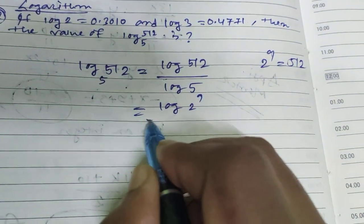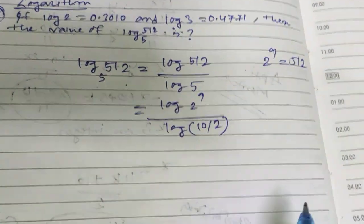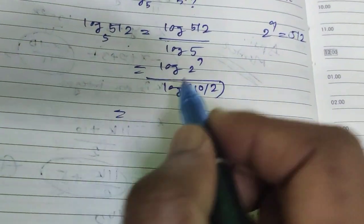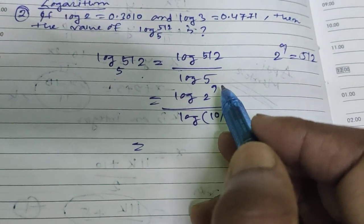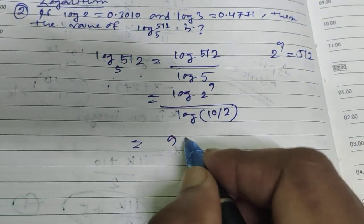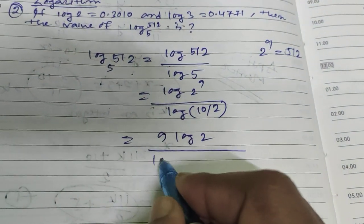This becomes log 2^9 divided by log 10/2. We can write log 2^9 as 9 log 2, and log 10/2 as log 10 minus log 2.